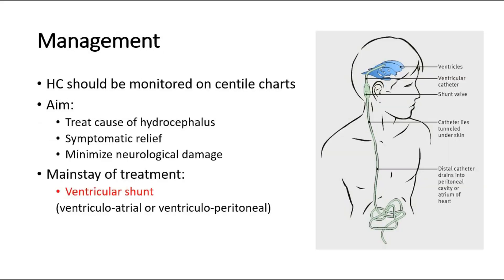For management, the head circumference should be monitored over time on centile charts. The treatment aims are to treat the cause of the hydrocephalus, relieve the symptoms, and minimize neurological damage to the child. The mainstay of treatment is ventricular shunting, which can be either ventriculo-atrial or ventriculo-peritoneal. The ventricular peritoneal shunt is a narrow plastic tube that drains the excess cerebrospinal fluid into the abdomen to prevent buildup of excess CSF.